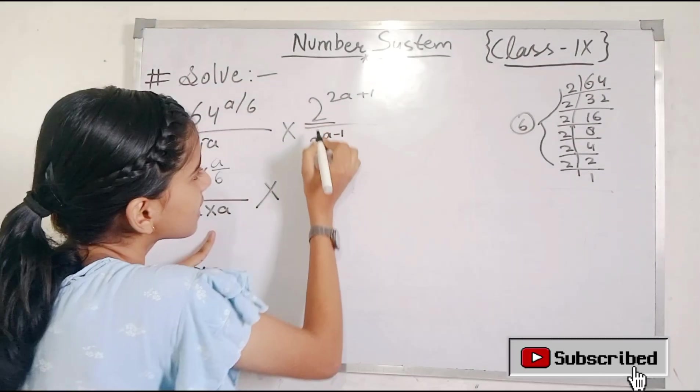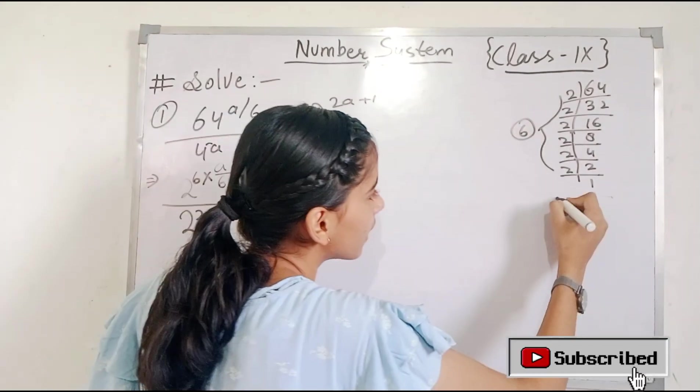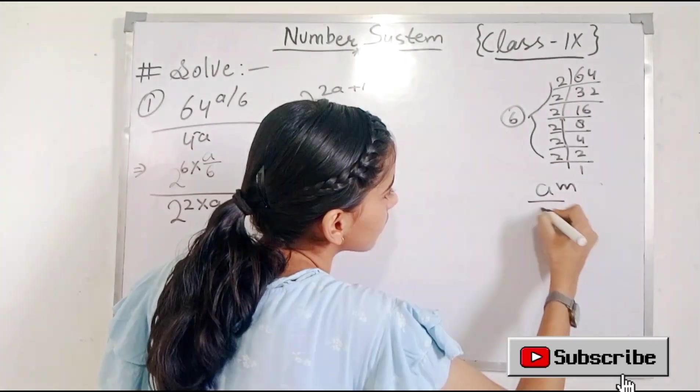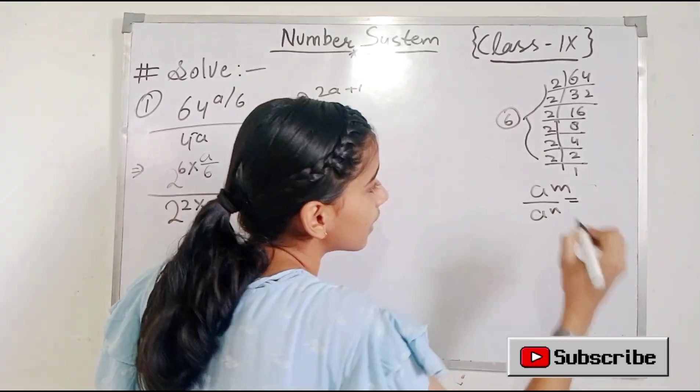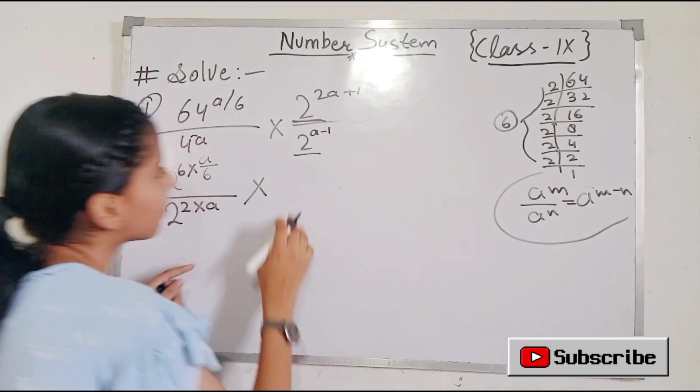Then multiply and the base is the same. So I hope you will know that when the base is the same but the powers are different, then the powers will be subtracted. So we will apply this identity here.